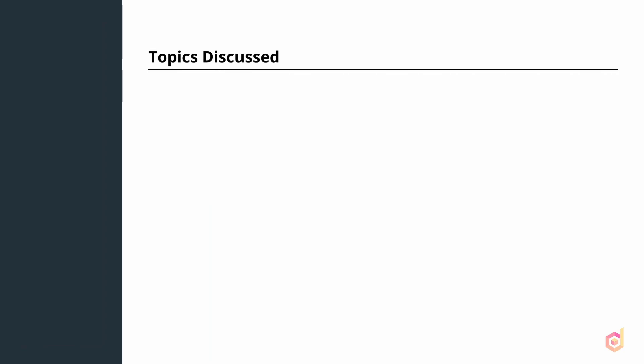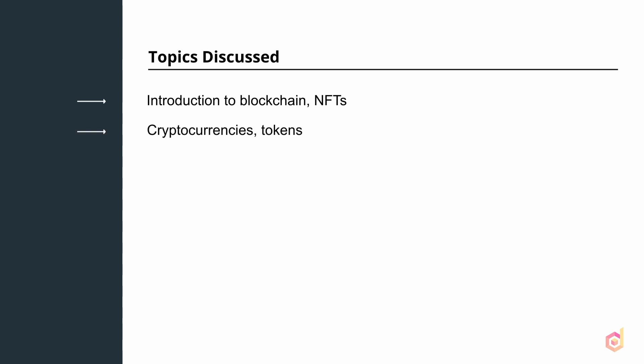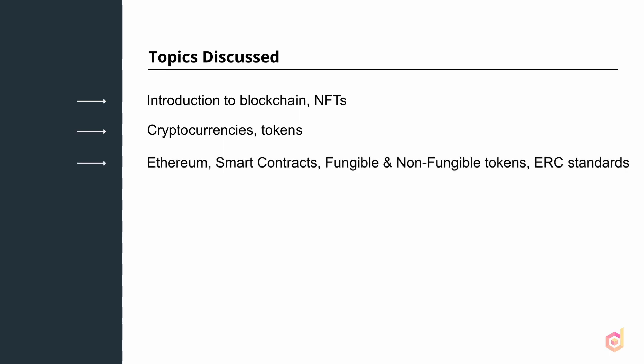These are the topics we are going to discuss in this course. First, we will see what NFTs are and how blockchain powers them. Then we will see what cryptocurrencies and tokens are and how they exist on the blockchain. Then we will cover Ethereum and smart contracts, along with fungible and non-fungible tokens and some ERC standards to build tokens on the blockchain. We will then discuss the ERC-721 standard in detail, which is basically used to deploy NFT tokens on the blockchain.